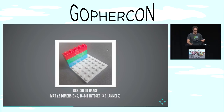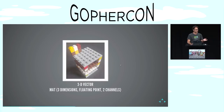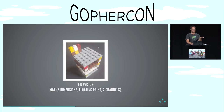An RGB color image would be a mat of two dimensions — X and Y — also of 16-bit integer values, but with three channels: one for red, one for green, and one for blue. If you've ever done photo editing or used the image package within Go, you've seen this sort of representation before. We can also use mat to represent other kinds of data — for instance, a 3D vector: a mat with three dimensions where each element is a floating point with two channels, perhaps X and Y, to represent a three-dimensional point cloud obtained from video analysis.